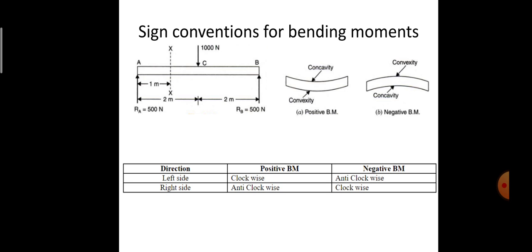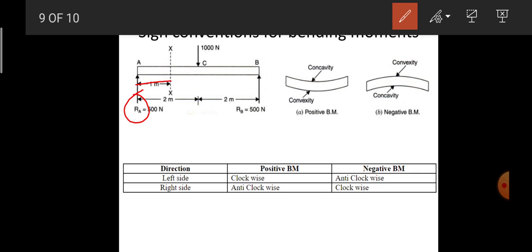For easy understanding, I have considered a simply supported beam AB carrying a load of 1000 N at exactly its midpoint. The reactions at RA and RB are equal, each having a magnitude of 500 N. I imagine the beam divided into two portions by section XX, where section XX is at a distance of 1 meter from A. The moment of all forces to the left of XX at section XX is RA into 1. The force is RA with perpendicular distance 1, so it is RA × 1, which is a clockwise moment.